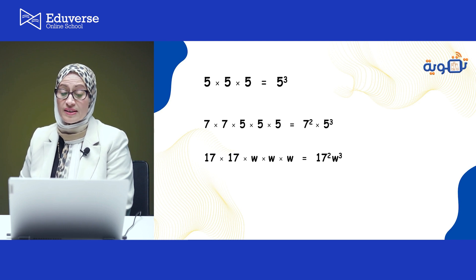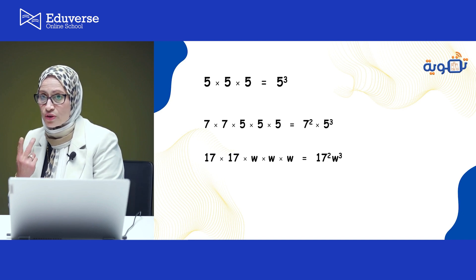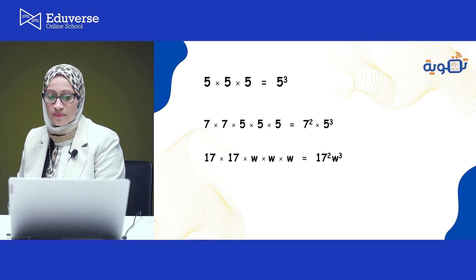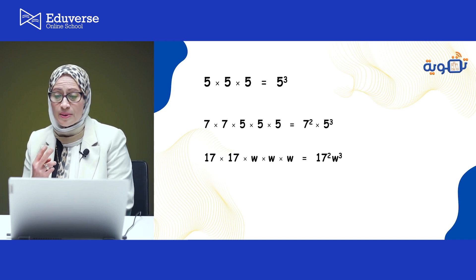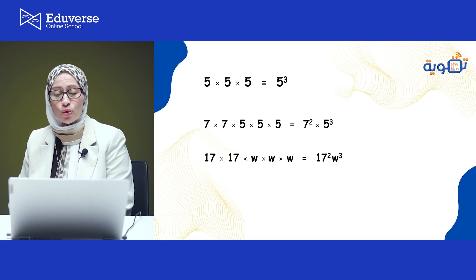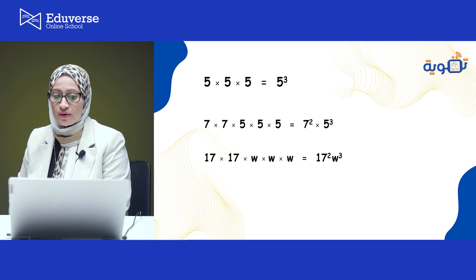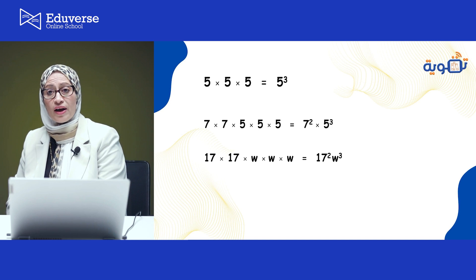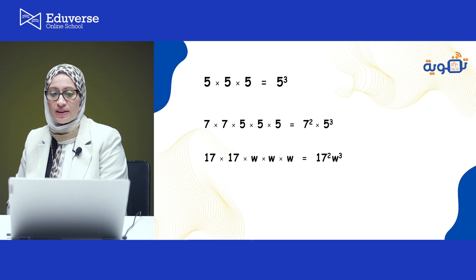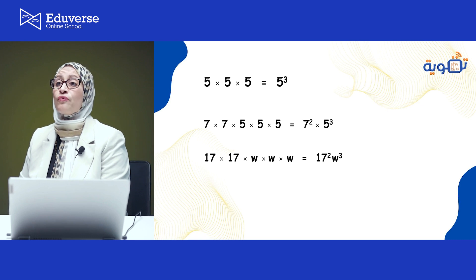What if it's 7 × 7 × 5 × 5 × 5? We have two different numbers here. In this case, 7 is repeating 2 times, so it would be 7 to the power 2. And 5 is repeating three times, which means 5 to the power 3. So the answer will be 7² × 5³.